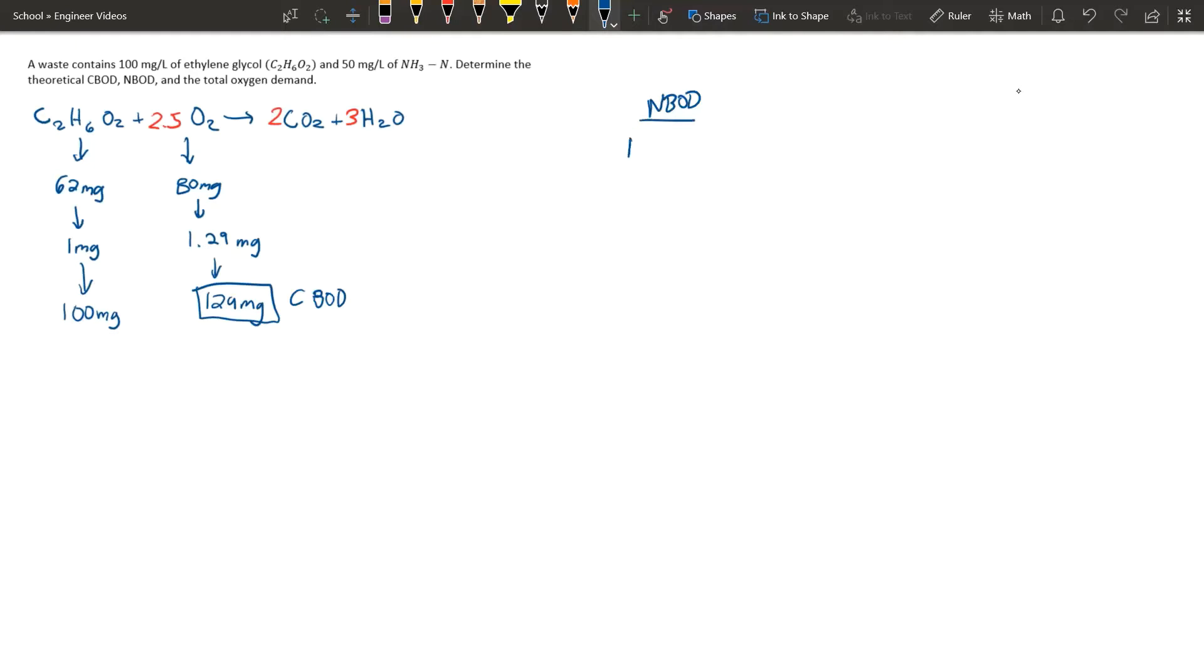Okay, now moving on to the NBOD. We have our NH3 as nitrogen plus our oxygen yields our nitrate, hydrogen ion, and our water. So you probably recognize this, we did this in the last problem, so we had to put 2 here to balance everything out, and it's basically the same exact thing, you get 229 milligrams as your NBOD. So the total is just 129 plus 229 and that should give you 358 milligrams.